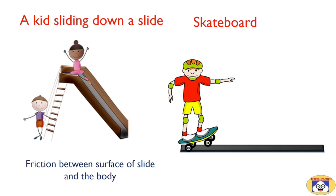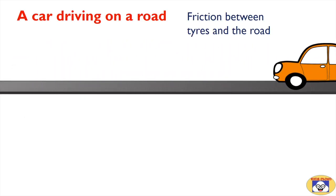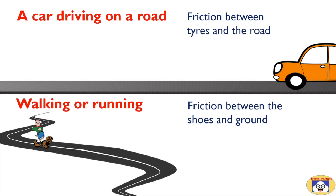Here are some examples of friction in our everyday life. Sliding is a type of friction — there is motion between the surface of a slide and the body of the kid. In the case of a skateboard, there is friction between the base of the skateboard and the surface. When a car moves over the road, there is friction between the road surface and the tires. Even walking or running is an example of friction — without friction between the shoes and the ground, you cannot walk properly.